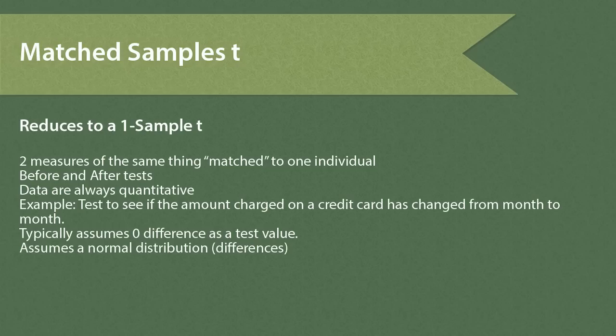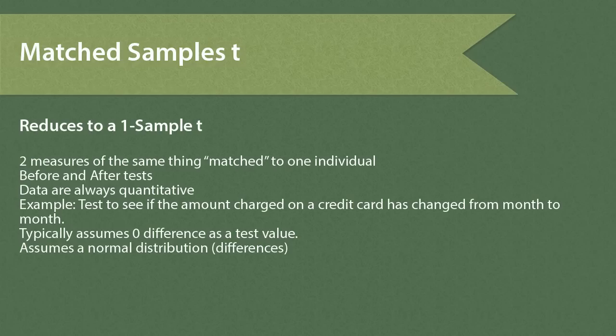We would need two measures of monthly spending, and we compute the difference as measure 1 minus measure 2. The matched samples T test assumes typically zero difference as a test value. Like all T procedures, it assumes a normal distribution, and we can check our sample differences to validate that assumption. To run the matched samples T test to see if there's been a significant change in the amount charged from month to month, we need to have two measures of amount charged.